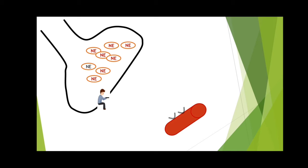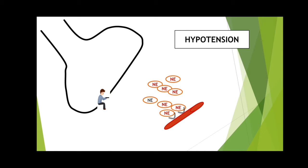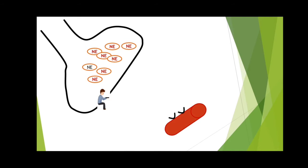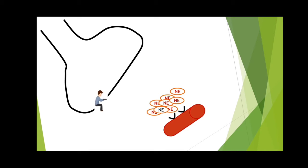Suppose this is a blood vessel and these are the alpha receptors. Whenever norepinephrine comes and binds with the alpha receptor of the blood vessel, it will lead to vasoconstriction — it will constrict the blood vessel. This is very much required in hypotension. However, whenever norepinephrine is present outside its neuron or in the synapse, the norepinephrine transporter will get activated and it will cause reuptake of the norepinephrine back into the neuron.